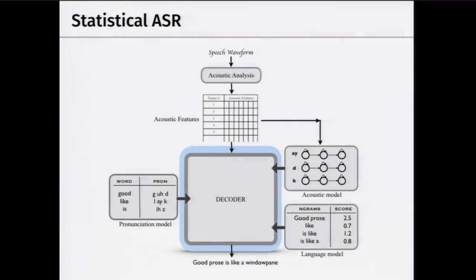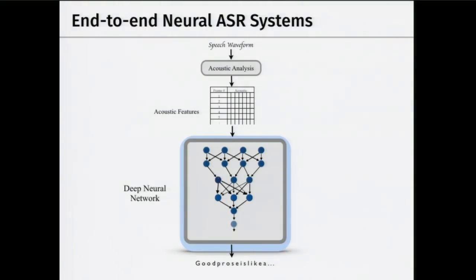A new hot direction is end-to-end ASR systems. Rather than building all those separate components, the idea is to directly learn a mapping from acoustic features to letters or characters. This eliminates the pronunciation model entirely — no longer worrying about how a word splits into its phone sequence. You can then apply character-level language models to rescore the output.